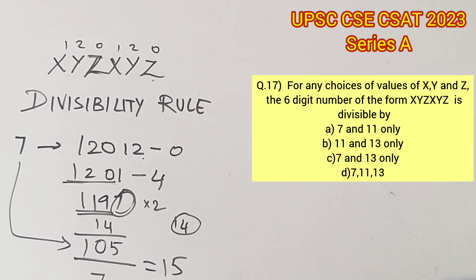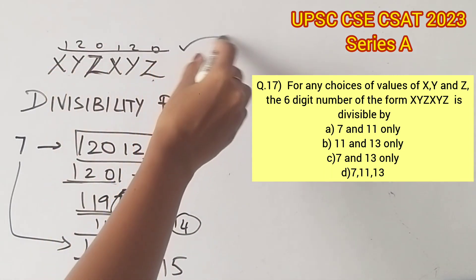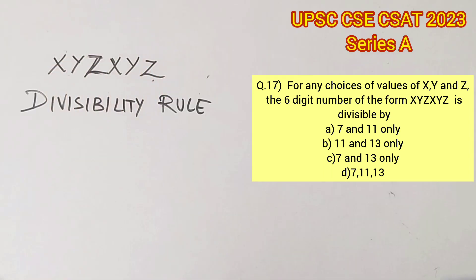With this, we can say that 120120 is divisible by 7, and hence XYZXYZ is also divisible by 7 for any values of X, Y, and Z. The last divisibility rule to check is for 13. Let's take the same random value 120120.